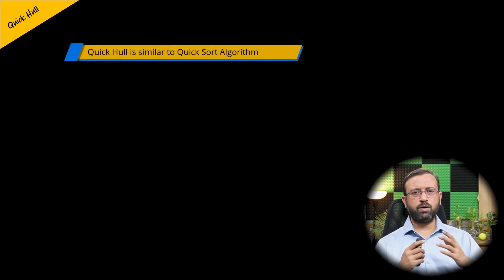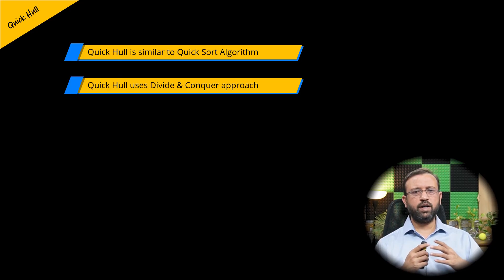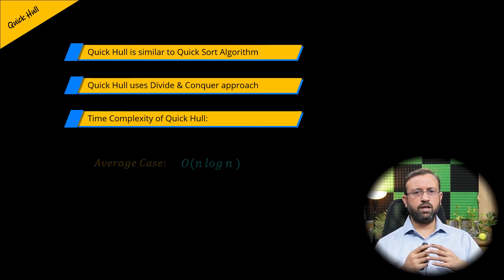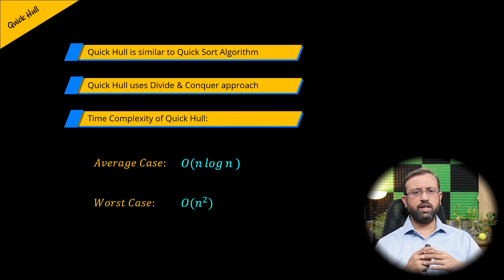To summarize, the problem of computing the convex hull can be solved using the quick hull algorithm, which is similar to the quicksort algorithm. The quick hull method uses a divide and conquer approach to recursively divide points into upper hull and lower hull, compute each, and combine the results to get the overall convex hull. The average case time complexity is O(n log n) when points are evenly distributed, and the worst case complexity is O(n²) when points are unevenly distributed between the upper and lower hull in each recursion.